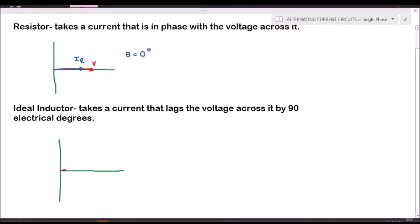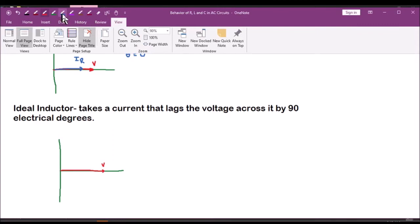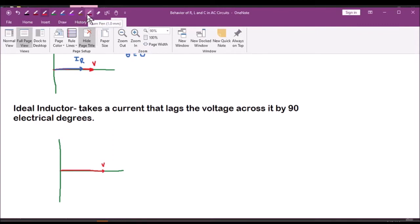We draw the phasor for our voltage along the horizontal line — this is the voltage. Because it is an ideal inductor, the current lags by 90 degrees, so it points downward. This is the phasor of our current I sub L, and the phase angle is equal to negative 90 electrical degrees, or equivalently 270 electrical degrees. That is how an ideal inductor behaves when supplied with AC.